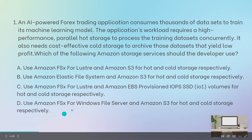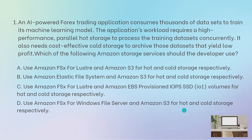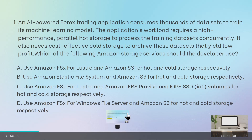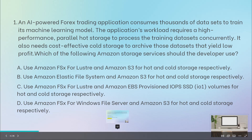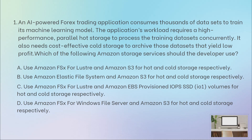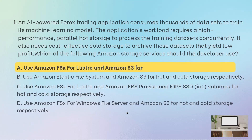The last incorrect option is: use FSx for Windows File Server and Amazon S3 for hot and cold storage. FSx for Windows File Server is incorrect because it does not have a parallel file system. So the correct answer remains FSx for Lustre and S3 for hot and cold storage respectively.